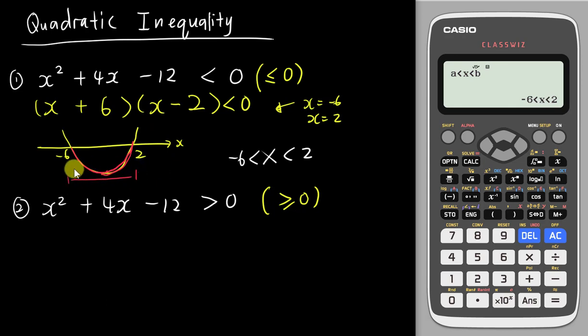What if we do the same question but the sign is greater than zero? If we factorize we get back the same thing: (x + 6)(x - 2) greater than zero.